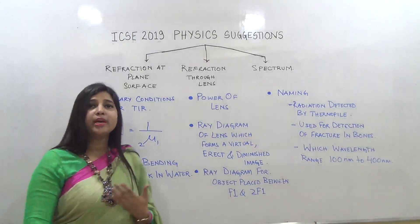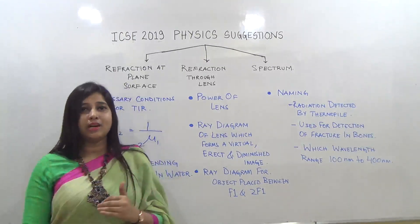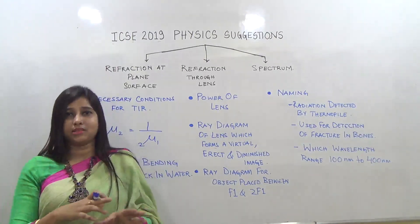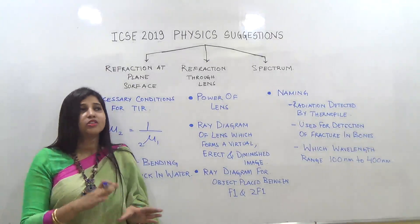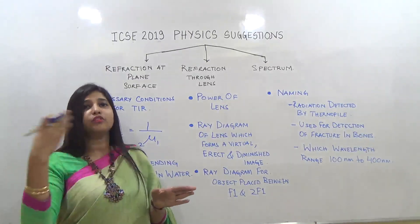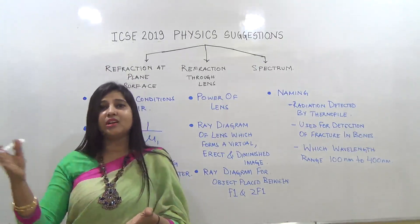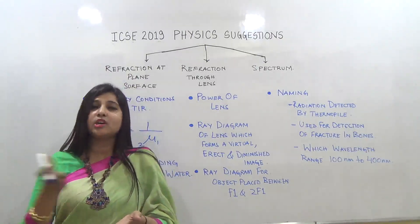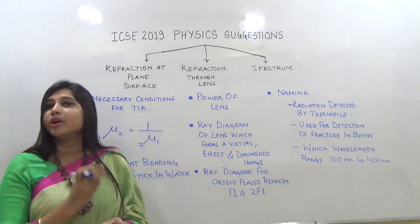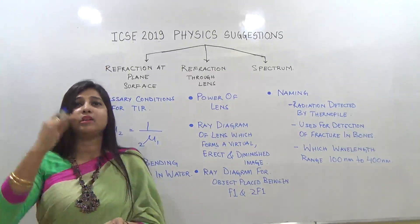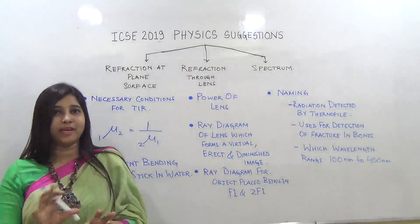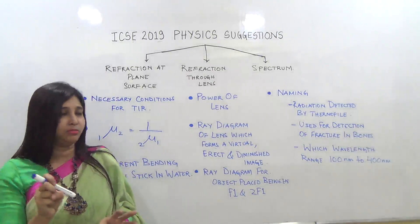For example, a question may state: Rhea sees the image of an object that is the same size while looking through a concave lens — is she seeing the correct image? The answer is no, because a concave lens never makes an enlarged image of an object. Such application-based questions can come.